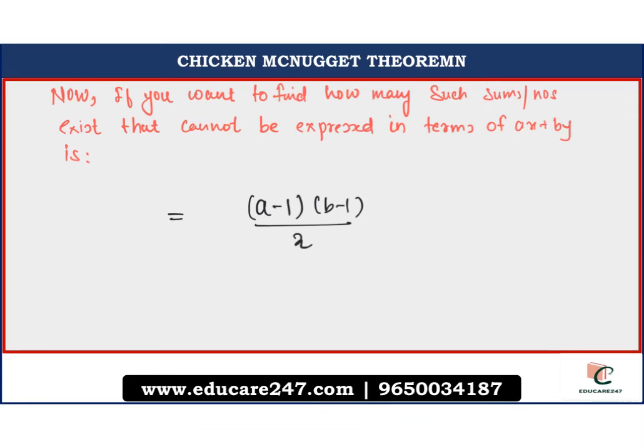Further, if you want to find out how many such sums or numbers exist that cannot be expressed in terms of ax plus by, that is the sum, is a minus 1 into b minus 1 divided by 2. In the previous case, we had taken a case of 2 and 5, we had denominations of rupees 2 and rupees 5. How many such numbers or sums are there which cannot be formed using 2 and 5? Basically, 2 minus 1 into 5 minus 1 divided by 2 which is equals to 1 into 4 divided by 2 is equals to 2.